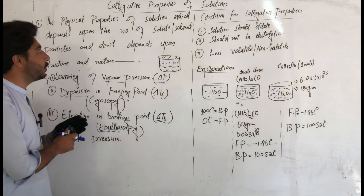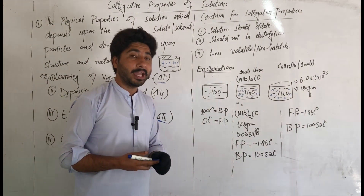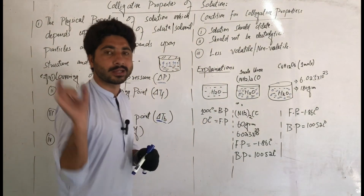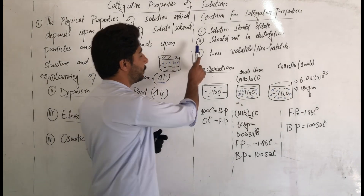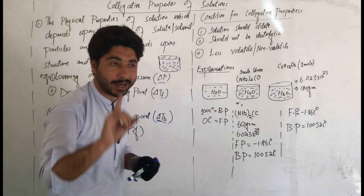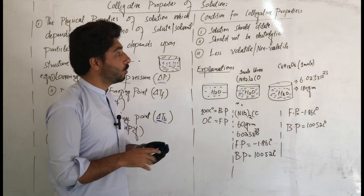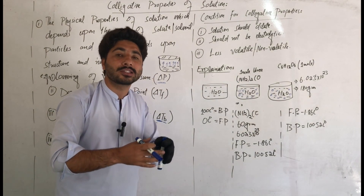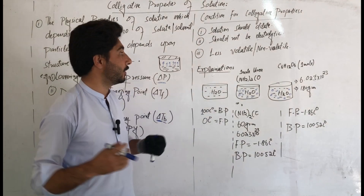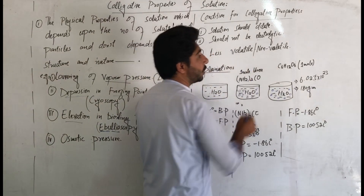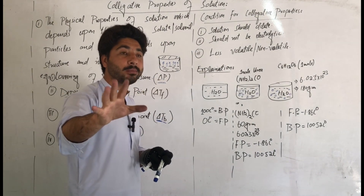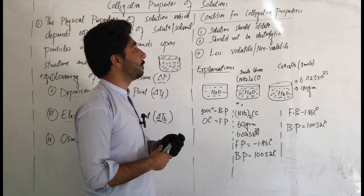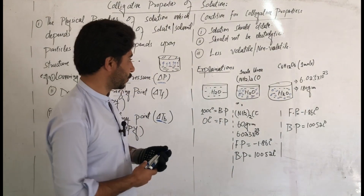Now, what are the conditions for colligative properties to be applicable? Condition one: the solution should be dilute, not concentrated. Condition two: the solute should not be an electrolyte — the solution should be non-electrolyte, meaning the solute does not dissociate into ions. Condition three: the solute should be less volatile or non-volatile.